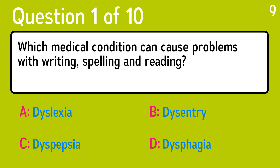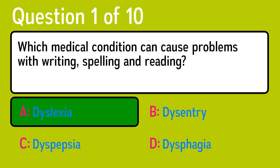The first question is: which medical condition can cause problems with writing, spelling, and reading? The correct answer is A, dyslexia.